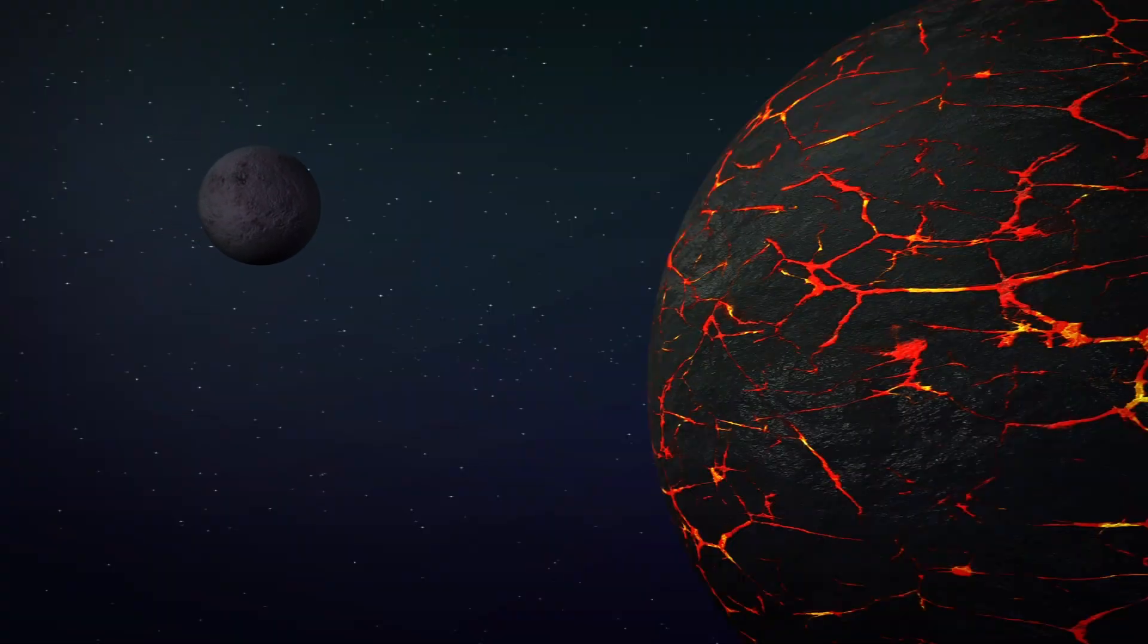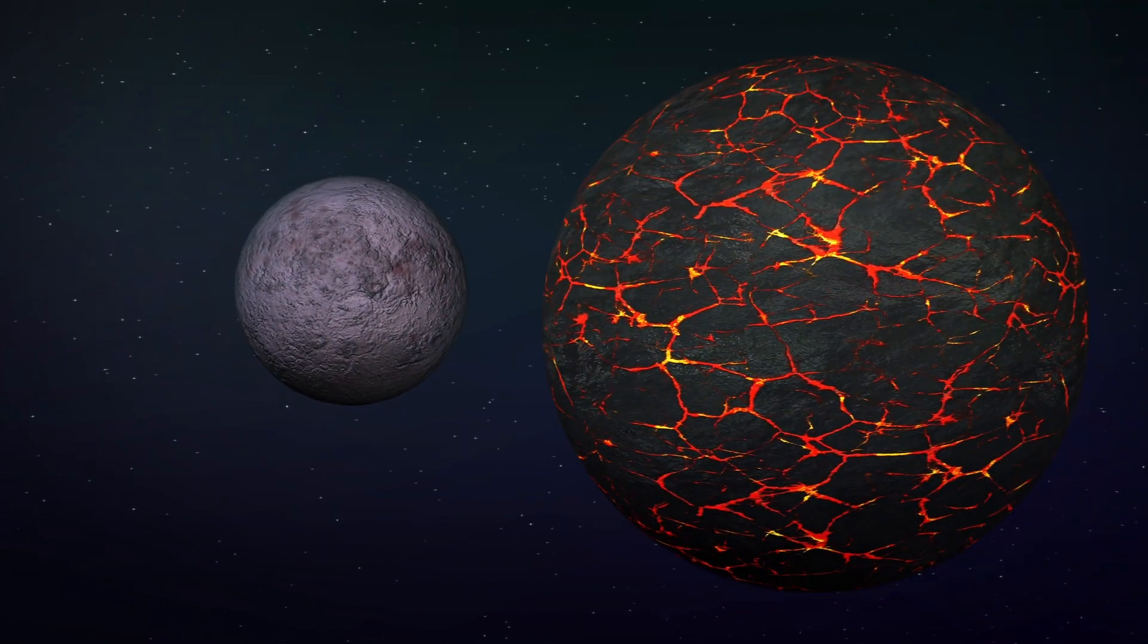According to the study, a catastrophic collision between Earth while it was still forming and a Mars-sized object with volatile elements could explain how these elements were introduced.